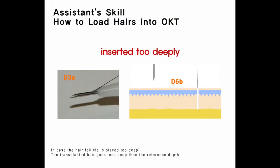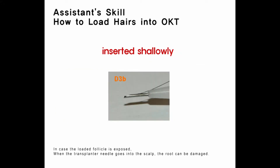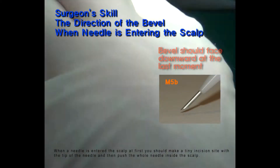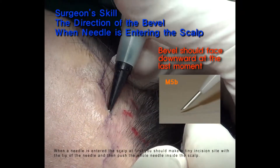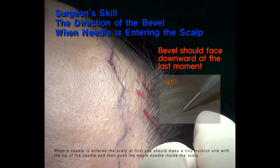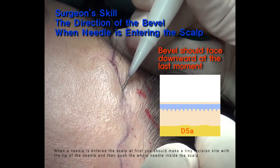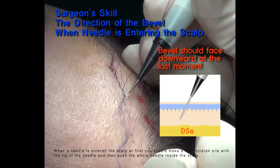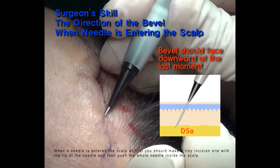In case the hair follicle is placed too deep, the transplanted hair goes less deep than the reference depth. In case the loaded follicle is exposed when the transplanter needle goes into the scalp, the root can be damaged. When the needle has entered the scalp at first, you should make a tiny incision site with the tip of the needle and then push the whole needle inside the scalp.